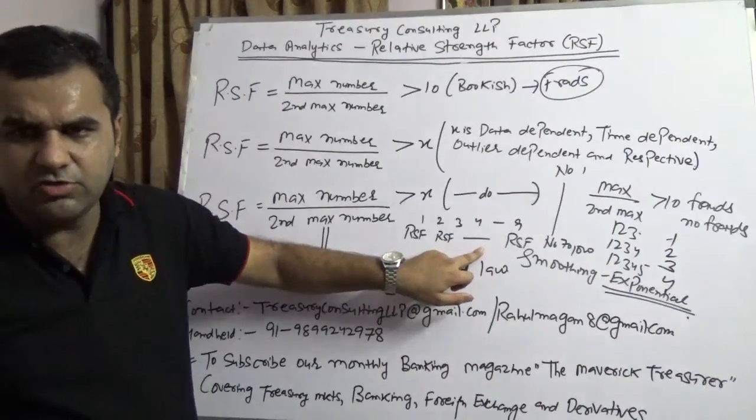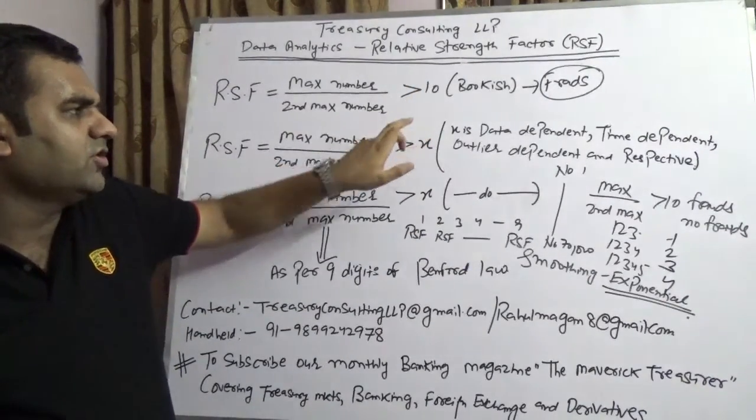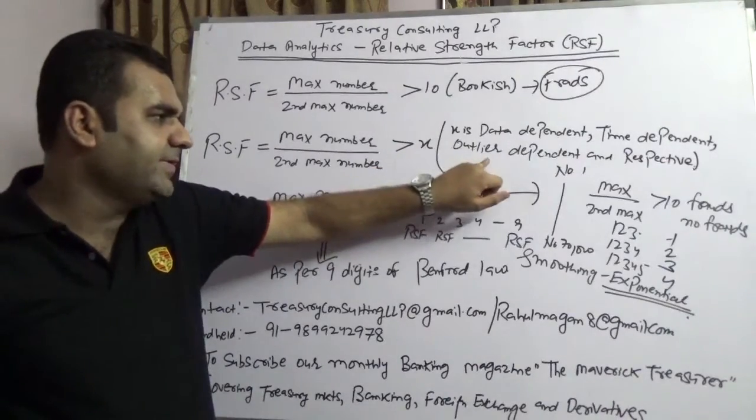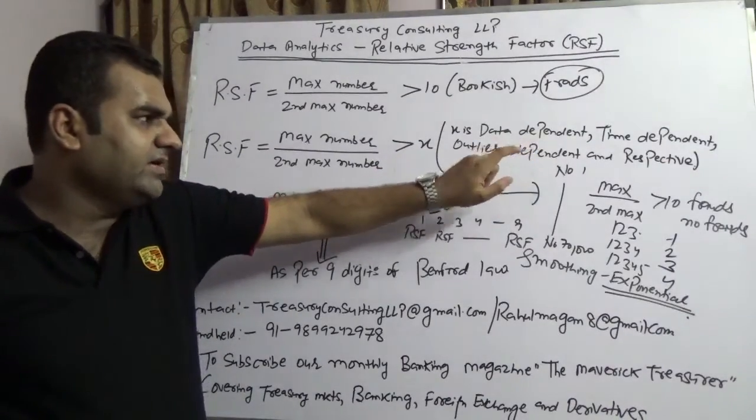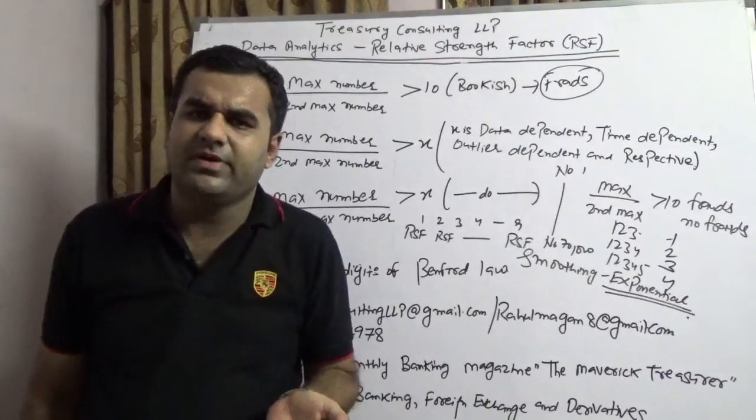And then what you should do? You have to make a conscious call whether you want to go ahead with 10 or you want to go ahead with X. X is, again repeating, data-dependent, it is time-dependent, and it is outlier-dependent. There could be various factors in that.